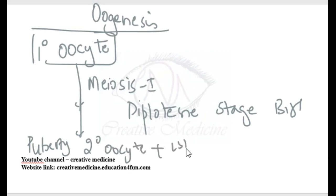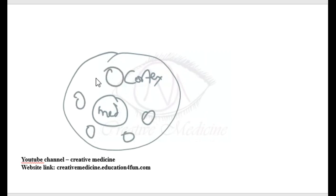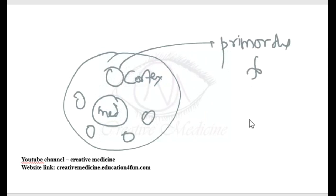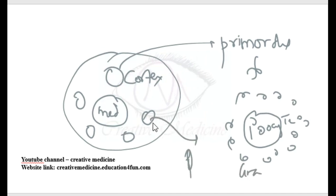Structure of the ovary: the ovary contains an outer cortex and an inner medulla. In the cortex, we have many follicles. A primordial follicle consists of a primary oocyte surrounded by theca cells and granulosa cells. The granulosa cells are seen in the cortex, while blood vessels and theca cells are seen in the medulla.